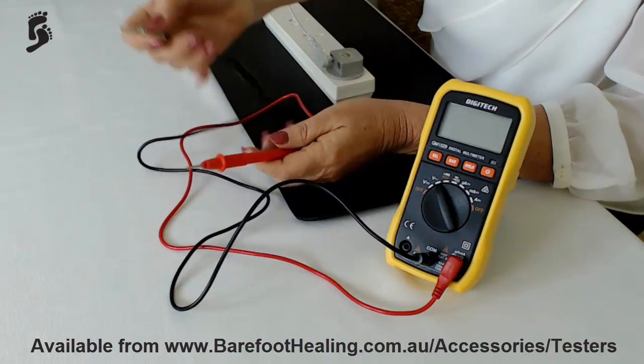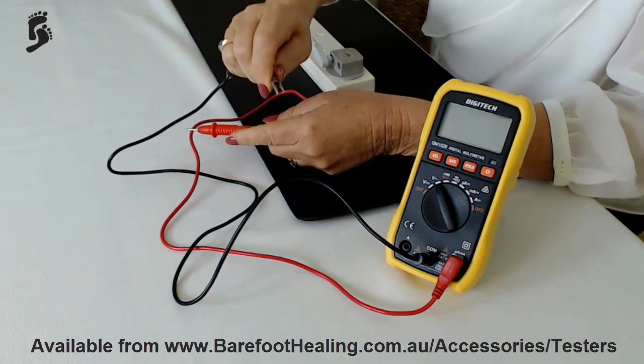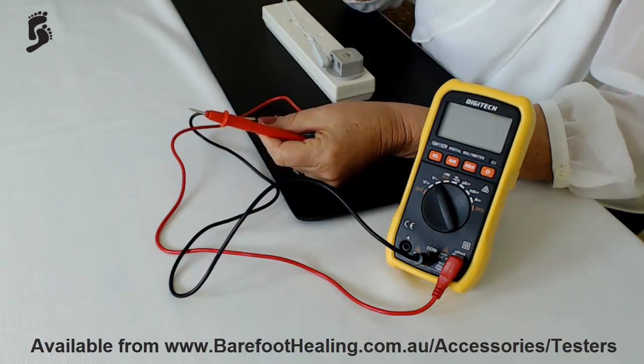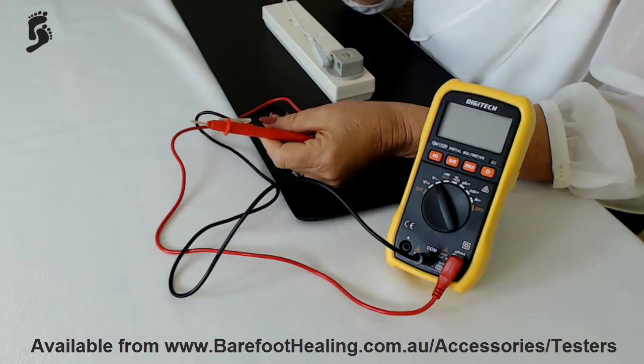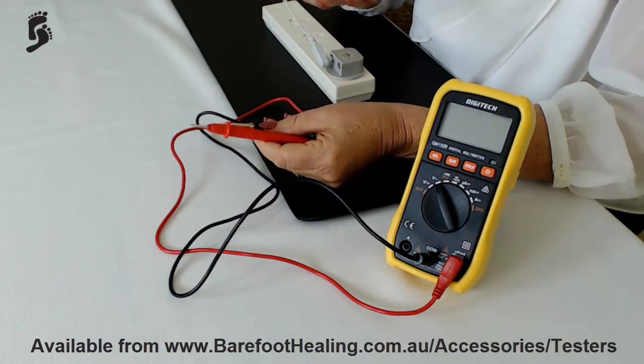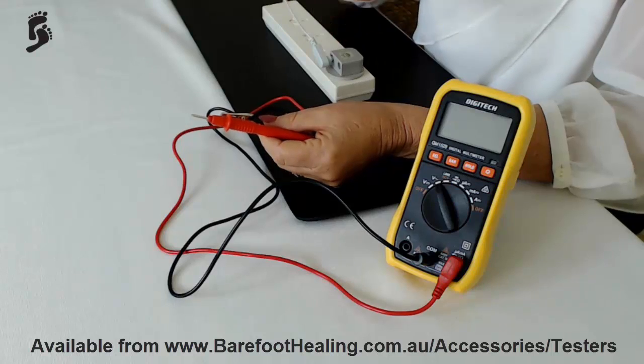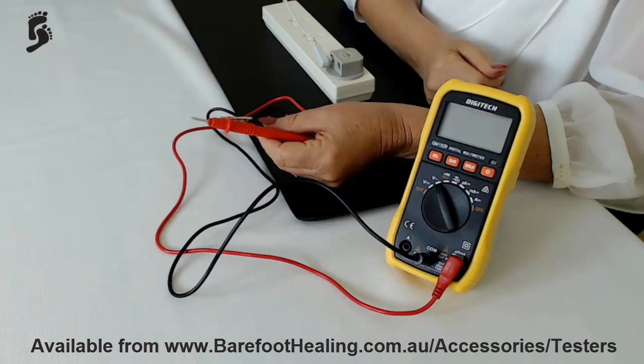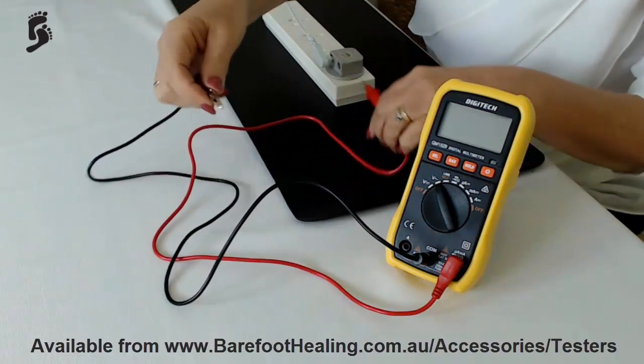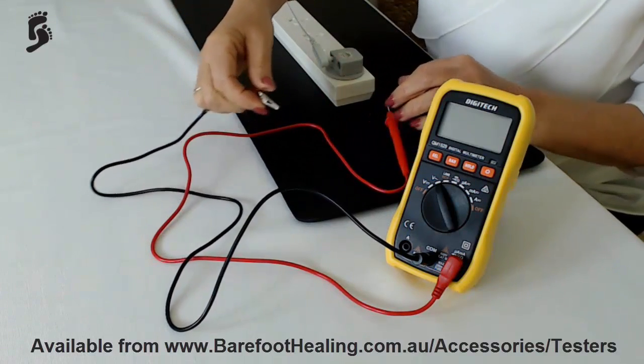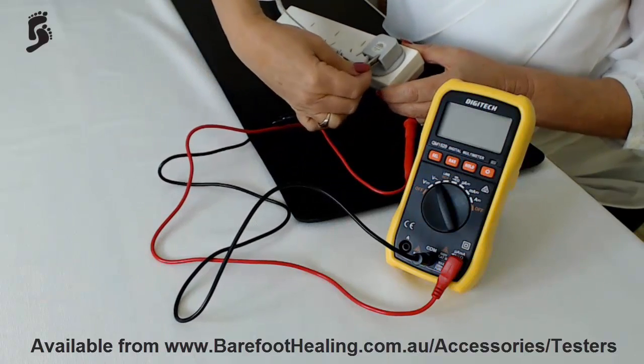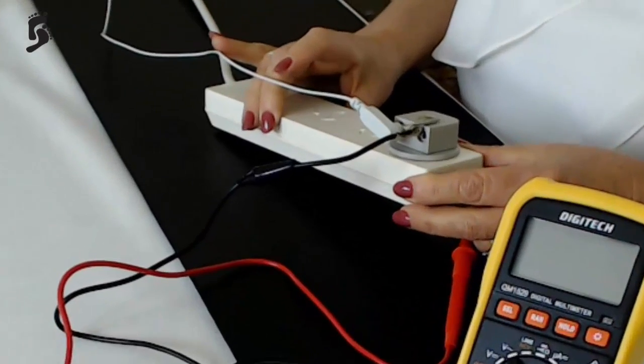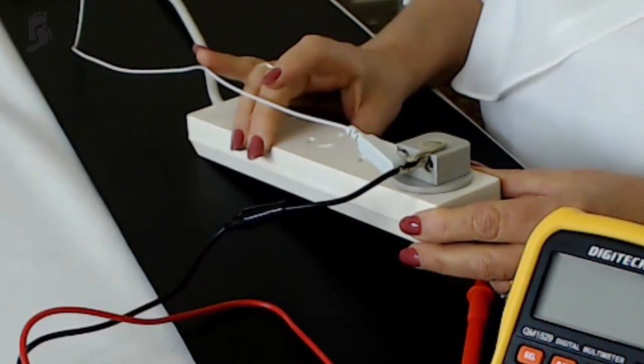Now the multimeter that we supply come with this little alligator clip because we just find it's easier to do this test and as I said this is a very basic test and it's really great for all us people that you know aren't electrically minded to be able to do and show people how earthing actually works. So with this little alligator clip here I'm actually going to plug it into the other side of the earthing plug and as you can see I've got it clips in rather nicely you want to make sure it's a nice firm connection.